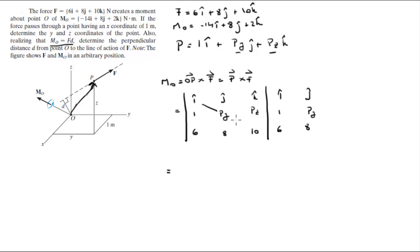You do your positive diagonals. i times py times 10 is 10py. j times pz times 6 is 6pz. This is in the i. And k times 1 times 8 is plus 8 in the k.